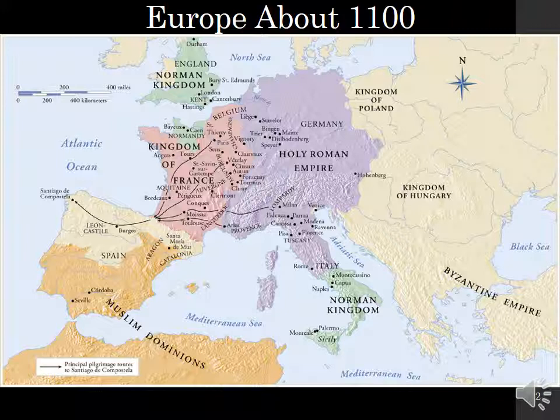Romanesque refers to something that is Roman-like and refers to the architecture of this time period, particularly large-scale church architecture. We will see barrel and groin vaults and round arches very much like what was seen in the Roman era, with the difference being the construction techniques and materials. The Romanesque era dates from about 1050 to about 1200, after which we move into the Gothic era. This coincides with the High Middle Ages, dated from about the 11th to 13th centuries.